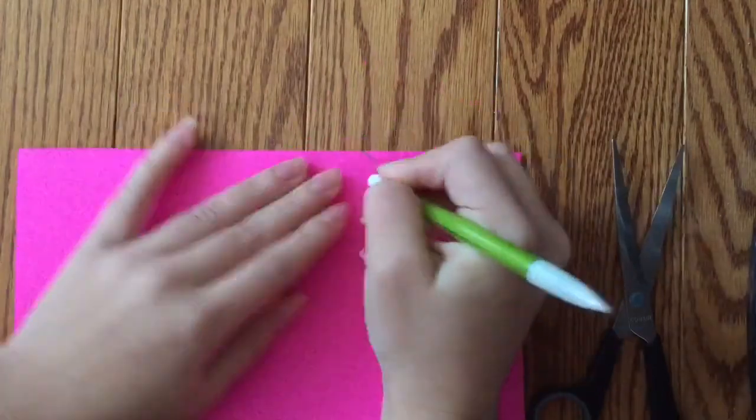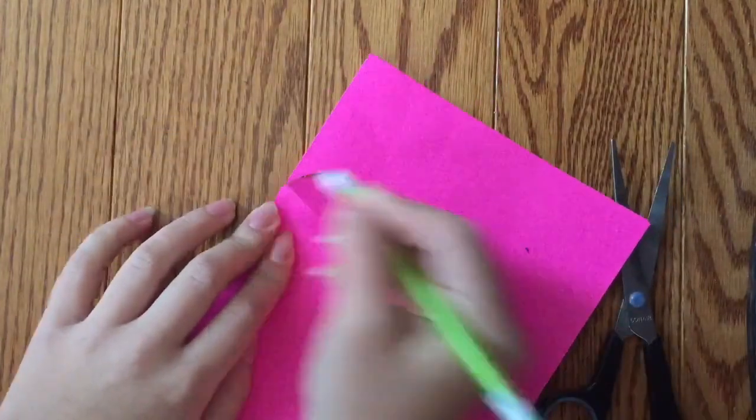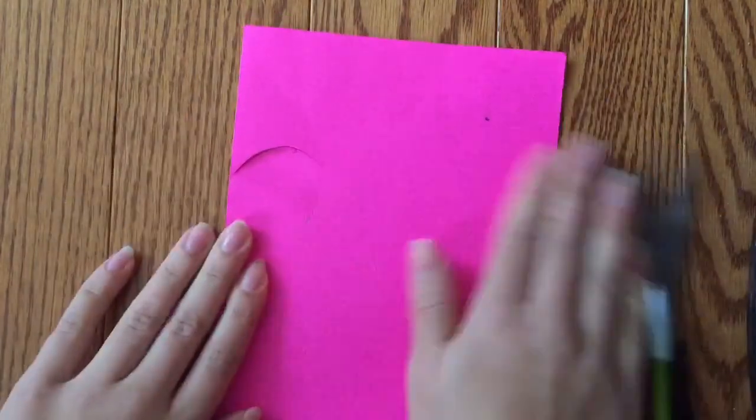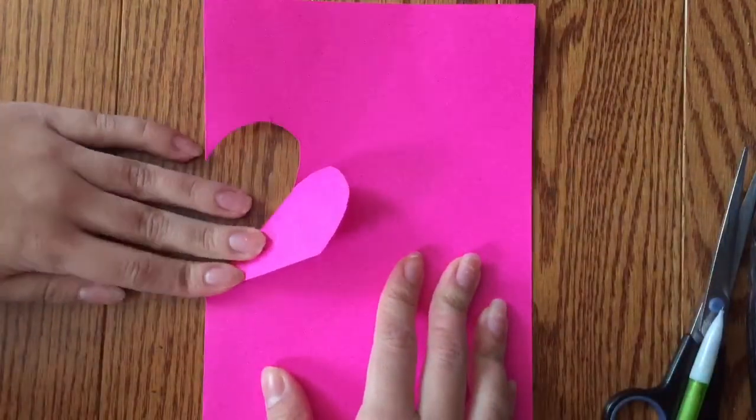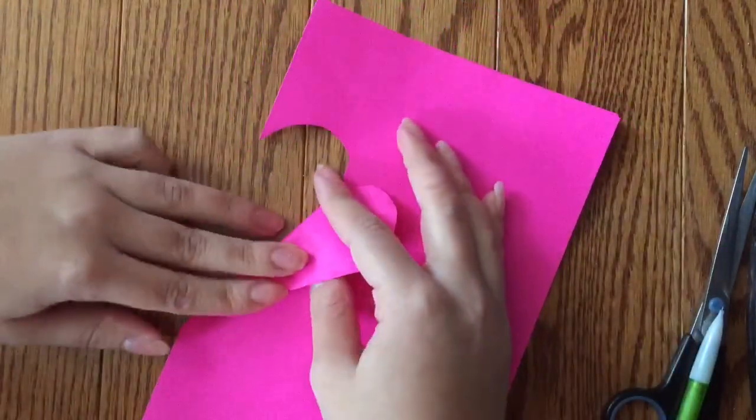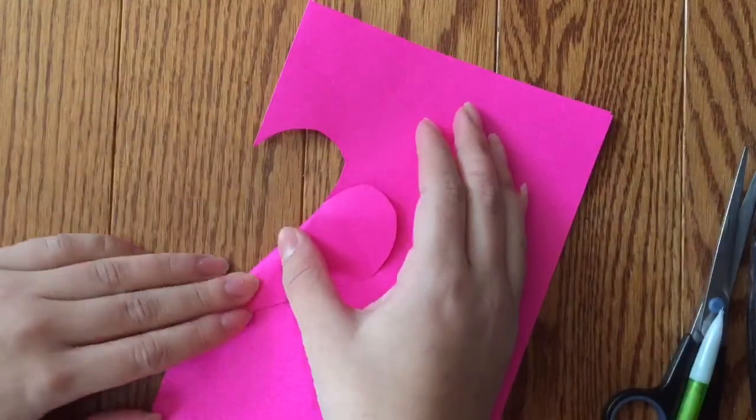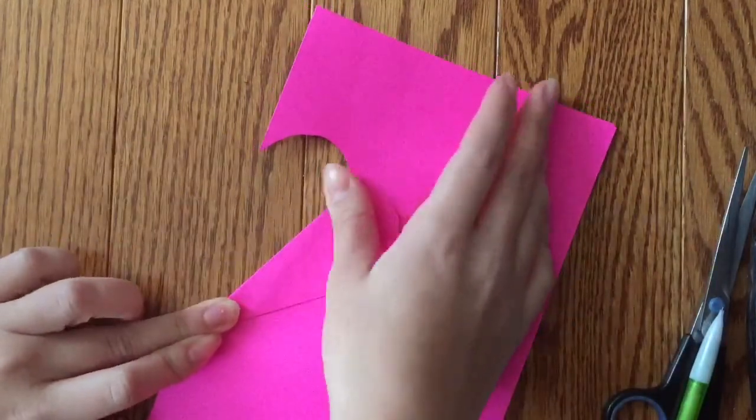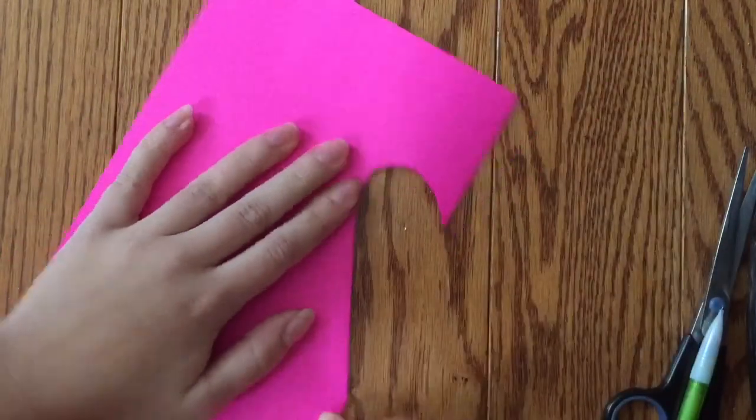After you've cut on the line, just erase some of the extra lines that may still be on the paper. Once you've done that, we're just going to fold the paper so that it kind of makes a heart shape. Now we're going to flip it over and do the same thing on the other side.